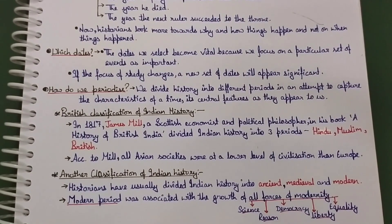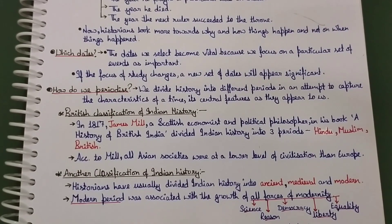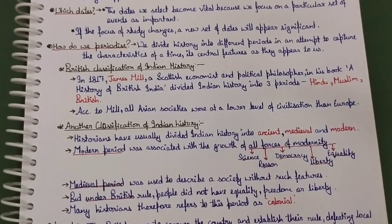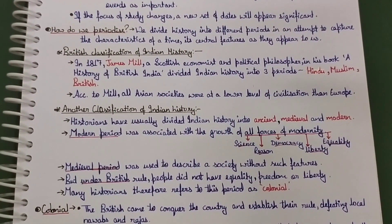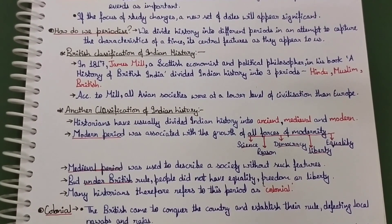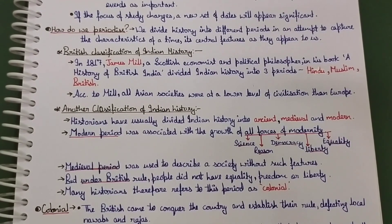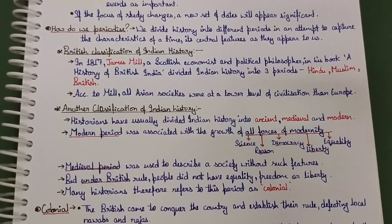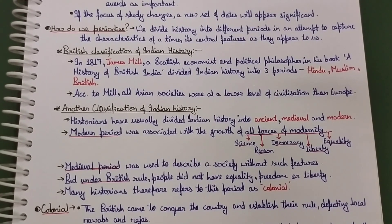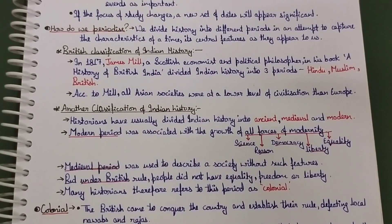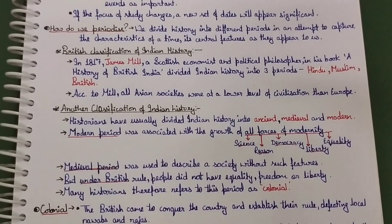Another classification of Indian history divides it into three parts: ancient, medieval, and modern. Historians have divided our history this way. The modern period was associated with the growth of all the forces of modernity — including science-related discoveries, focus on rules and regulations, and the causes of democracy, liberty, and equality.